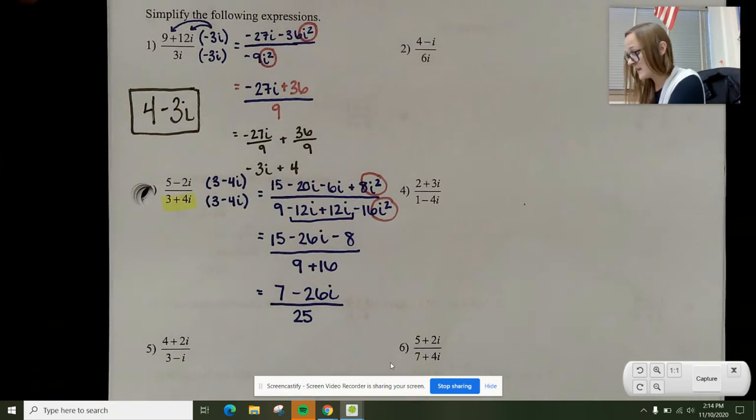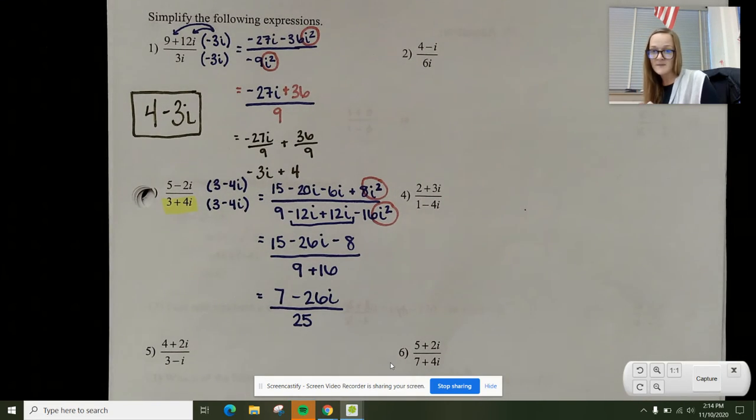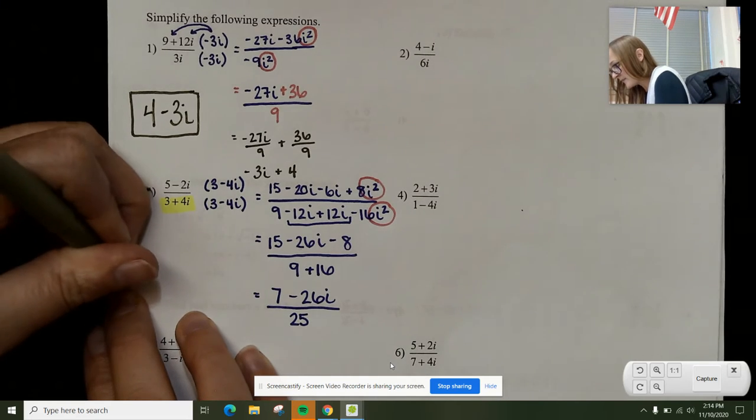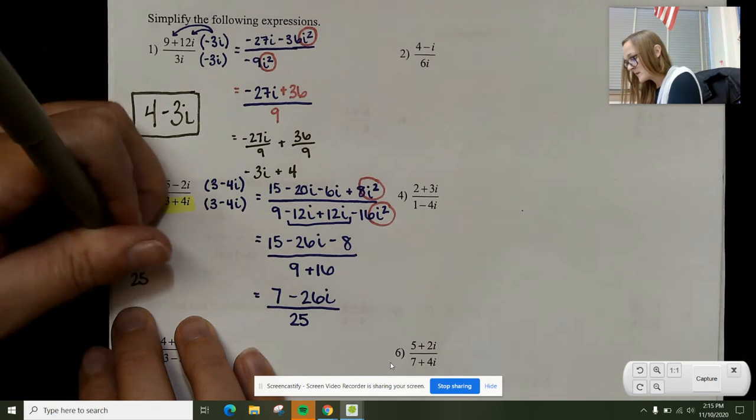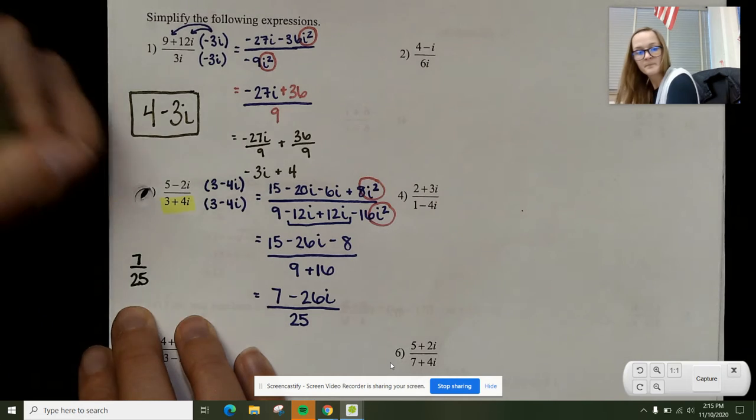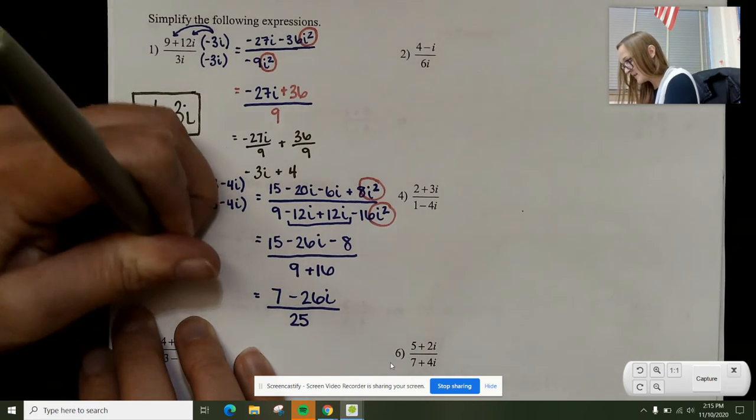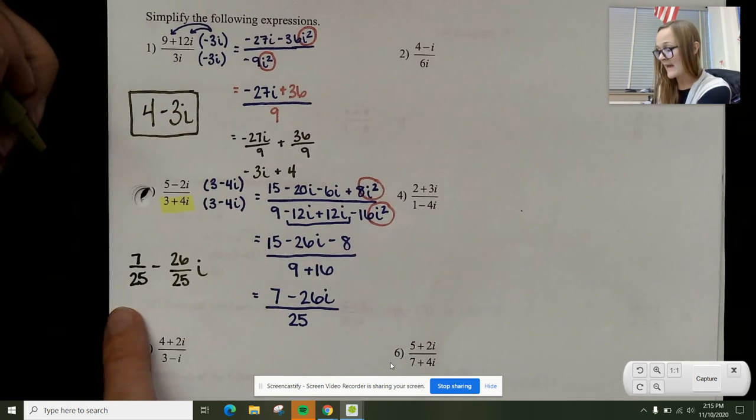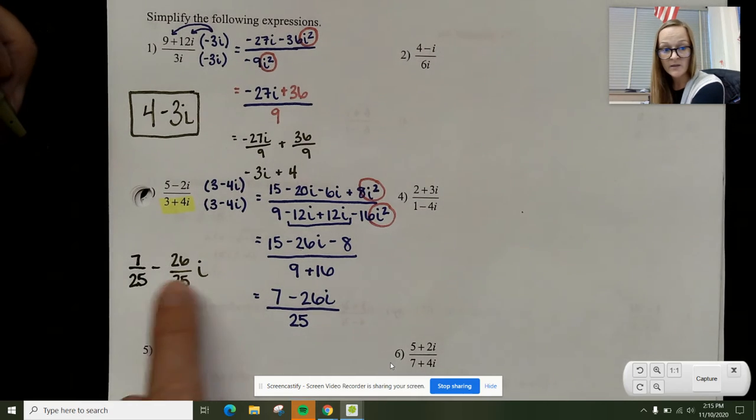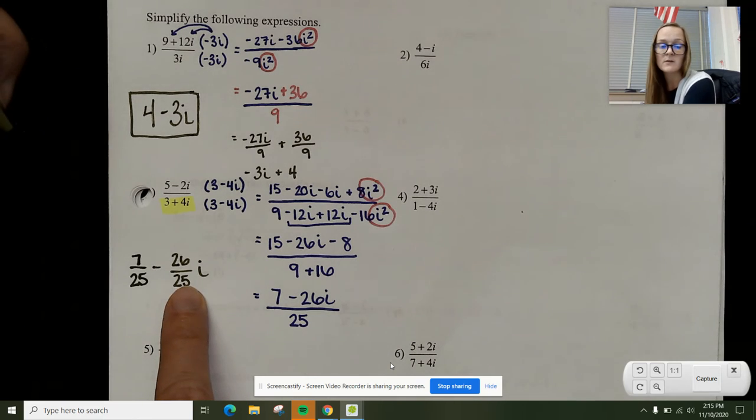This is different from the last one because they're not divisible. But I can still split it up and write my final answer as fractions. This would be 7 over 25 minus 26 over 25 and the i gets tacked on at the end. This shows you a plus bi. The a value is 7 over 25 and the b value is negative 26 over 25.